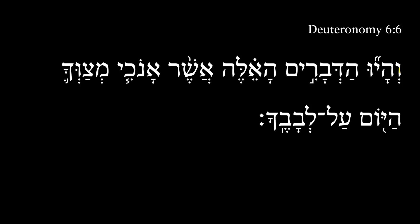Deuteronomy 6:6. Ve'hayu ha'devrim ha'ele asher anokhi metzavecha hayom al levavecha. So if we come back to the beginning here, we get 'and they shall exist.' This is a call perfect 3CP of the root haya plus a vav consecutive. So this is where we get the notion of 'and they shall exist' — that vav consecutive shifts that completed action into a future incomplete action. These things are the subject that should exist.